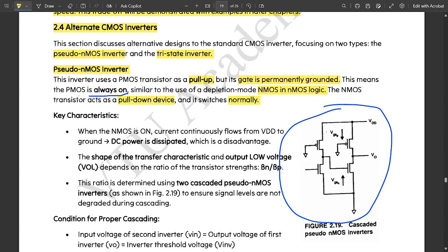Some key characteristics of this pseudo-nMOS inverter: when the nMOS is in on state, current continuously flows from VDD to ground and DC power is dissipated, which is a disadvantage.